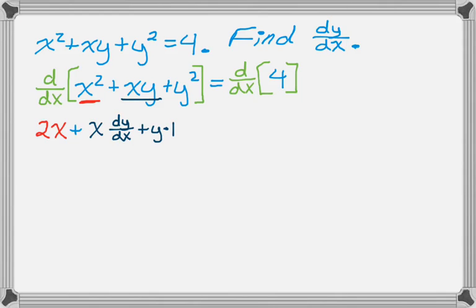Now I'm going to have to use a chain rule on y squared, because y is a function of x. It's implicitly defined here. So it'll be 2y. And then since y is a function of x, I have to multiply by the derivative of y, which all I know is dy/dx.